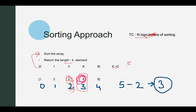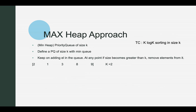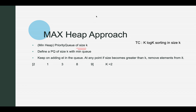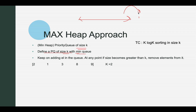The interviewer will definitely ask you to improve on this. The next approach is the max heap approach — we'll use a min priority queue of size k. What we're targeting here is a reduction in the operations performed on the array. We define a priority queue of size k with min-heap logic. A min heap always gives you the minimum element when you poll, so whatever remains are the larger elements.